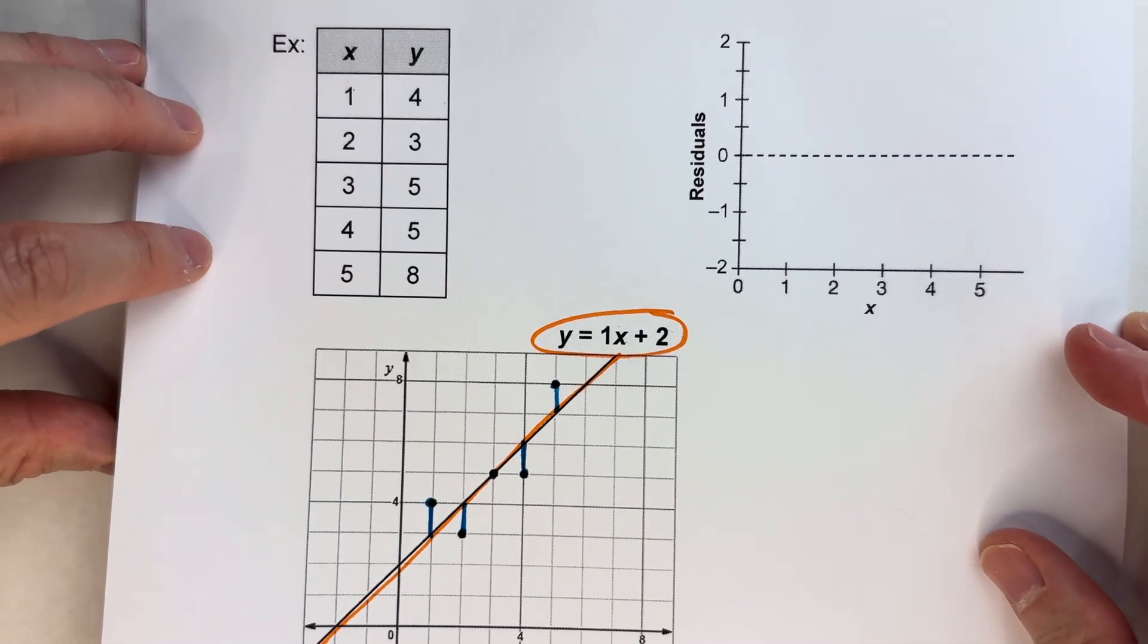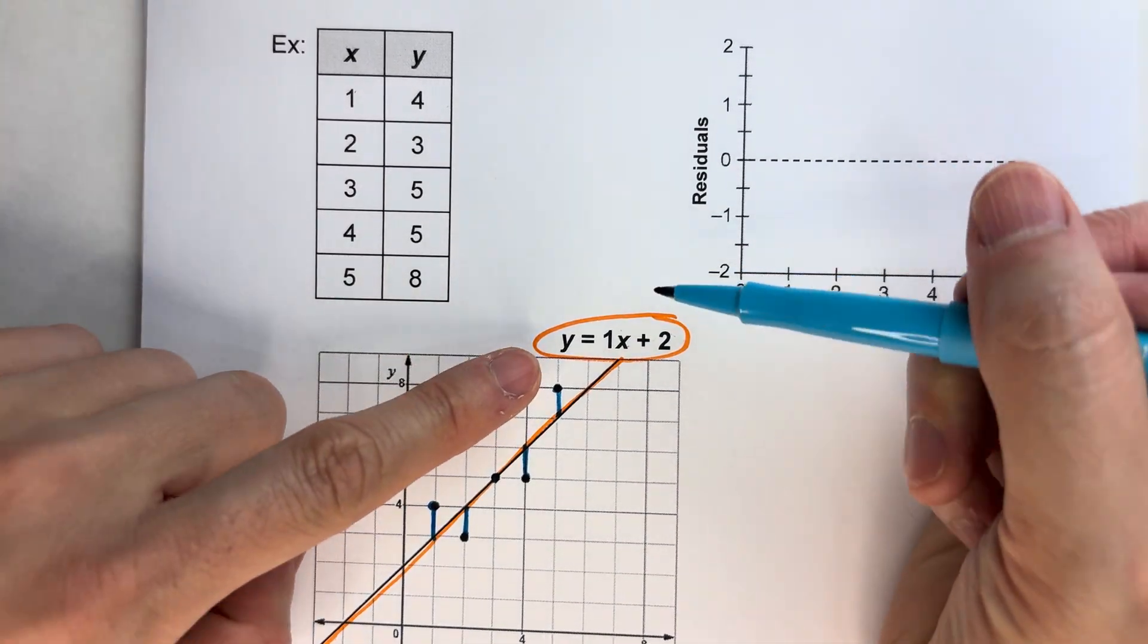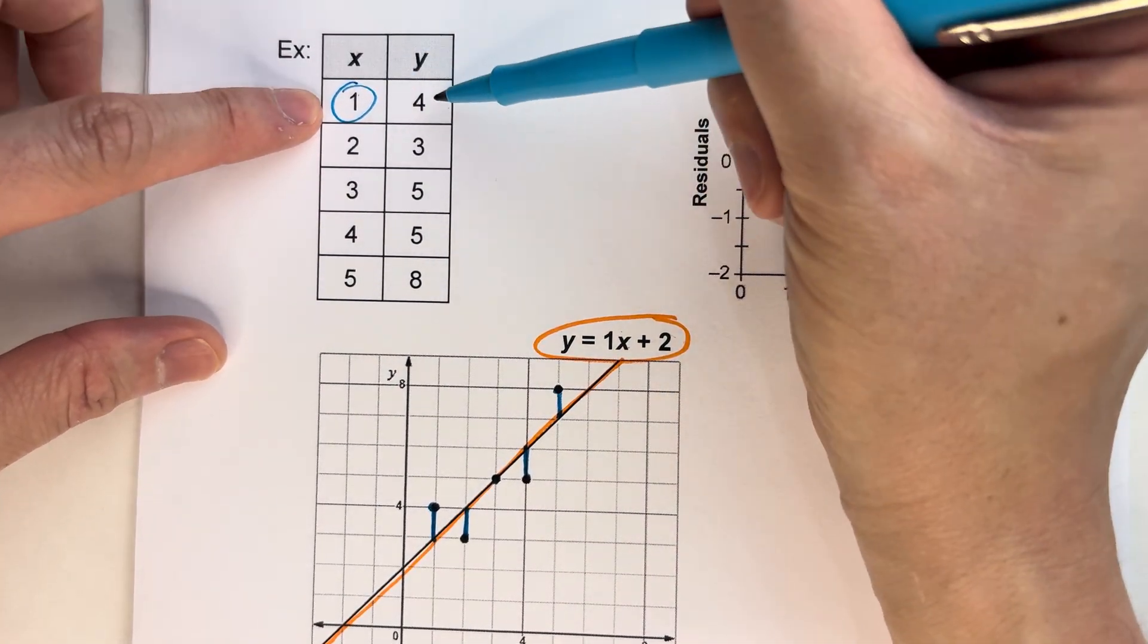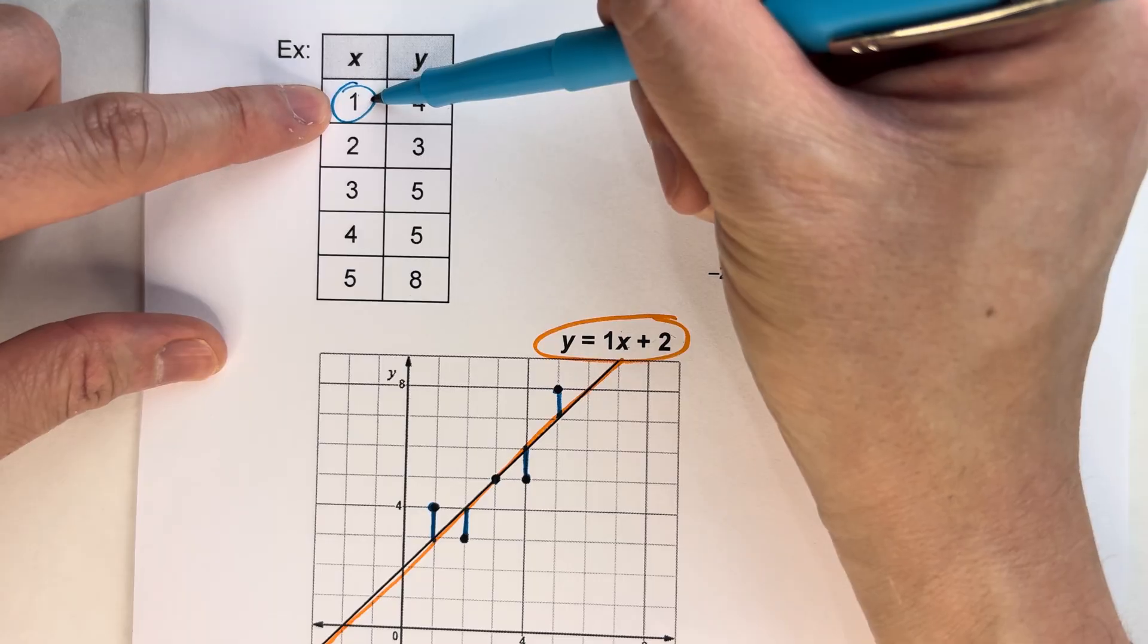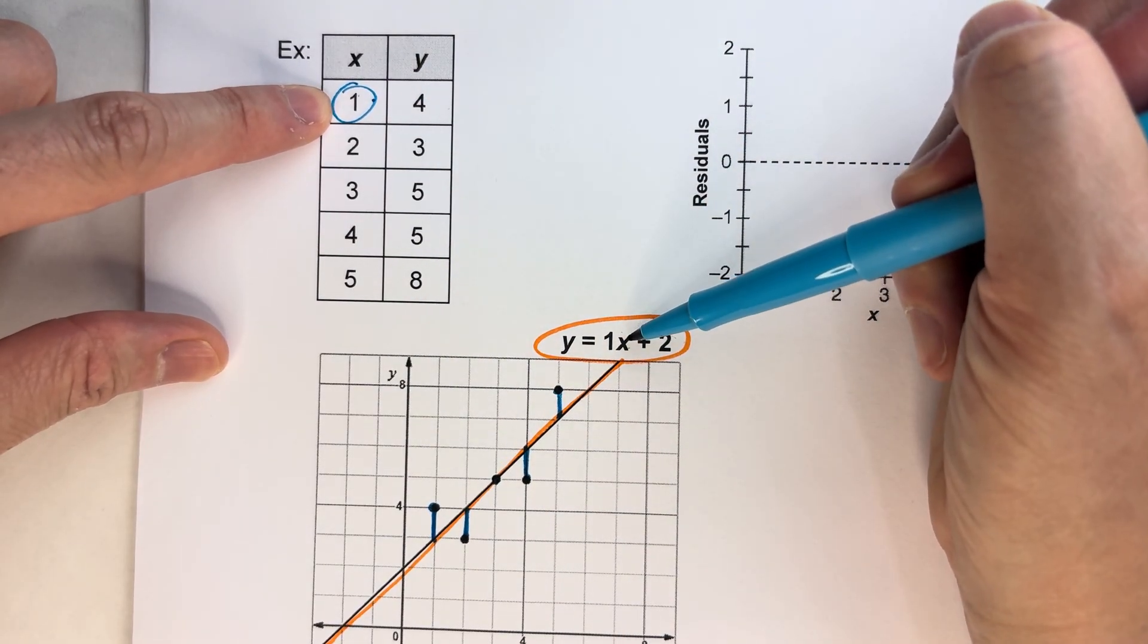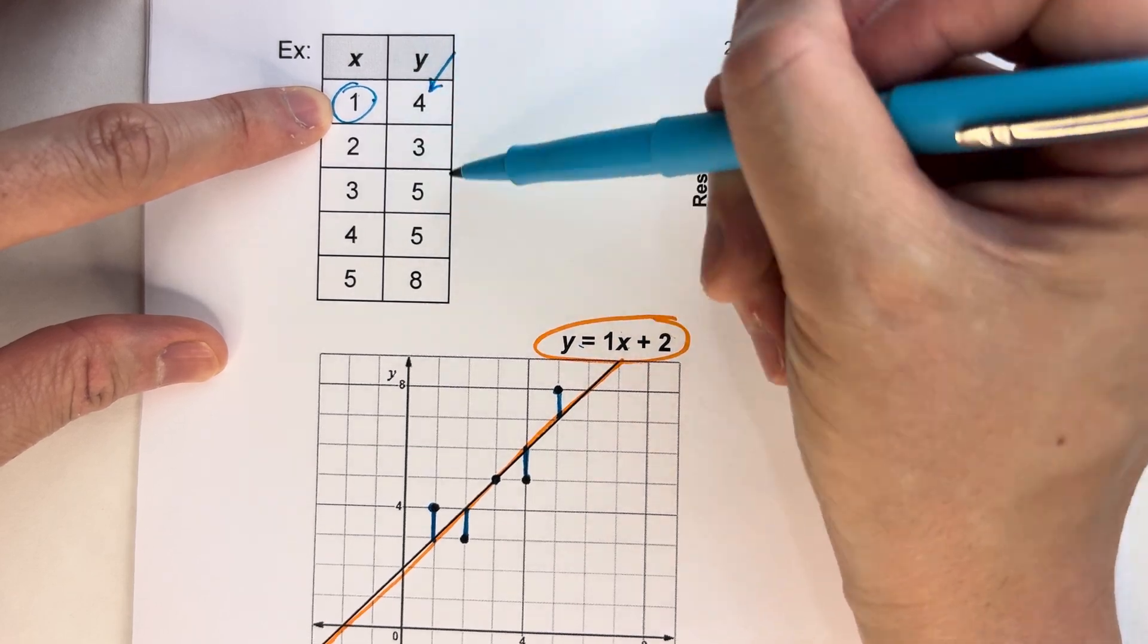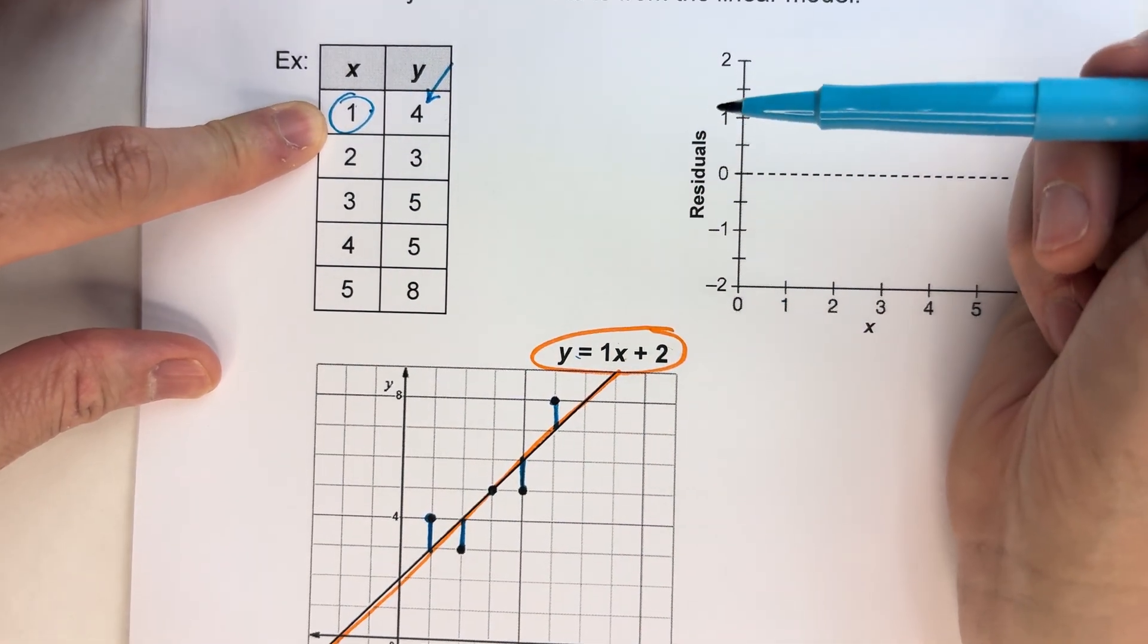Now, how would I do this mathematically? Well, we have this equation here. So for each x value of our data, what we can do is plug that number into our equation to see what we get and compare it to what we actually got. And remember, this table represents what we actually got.